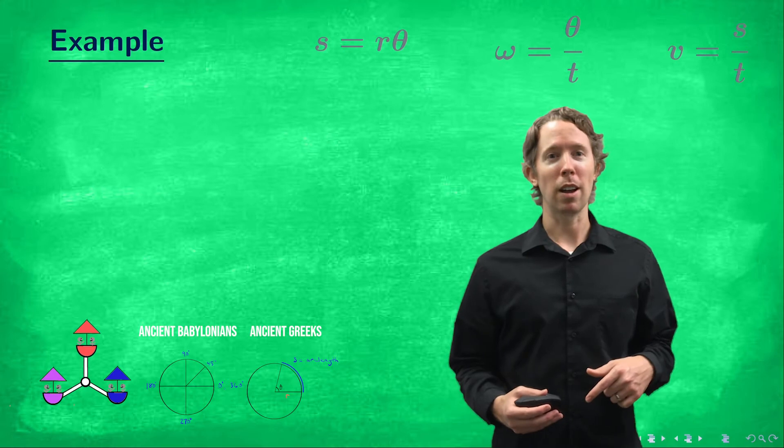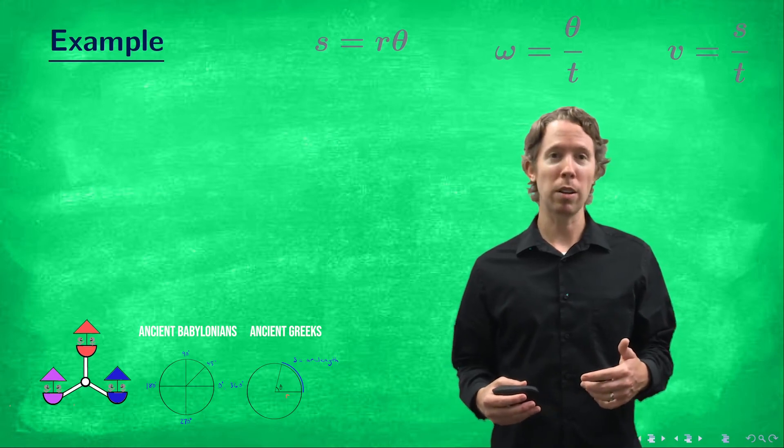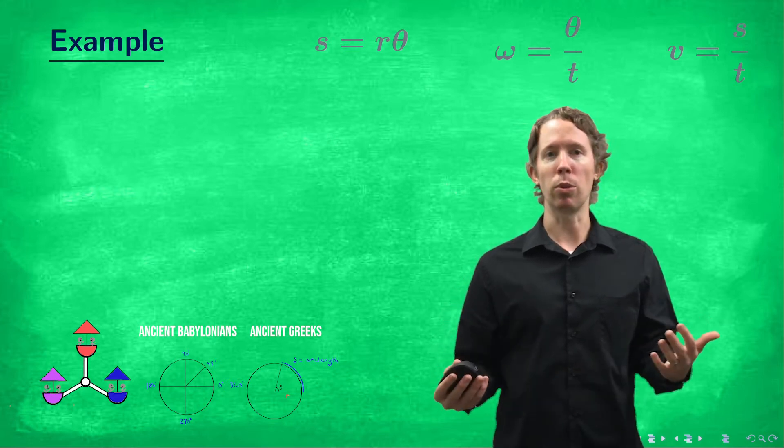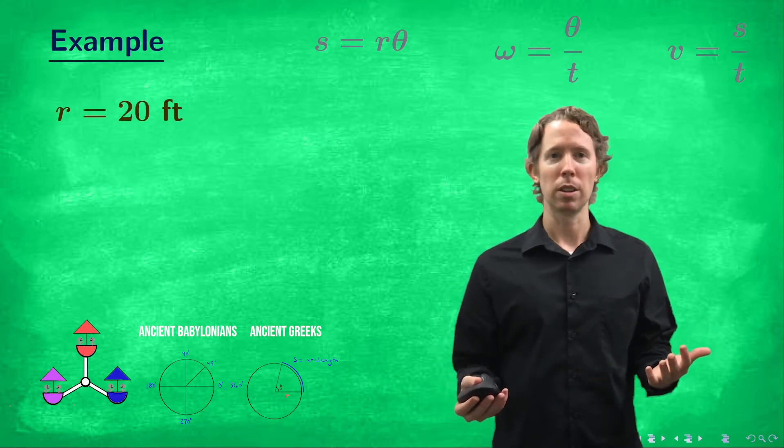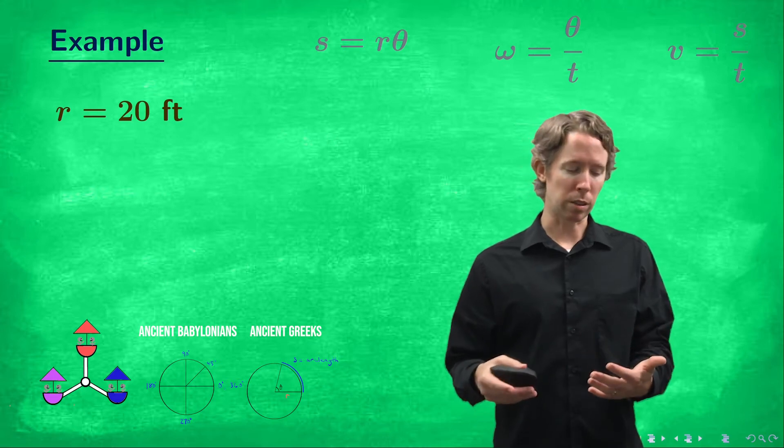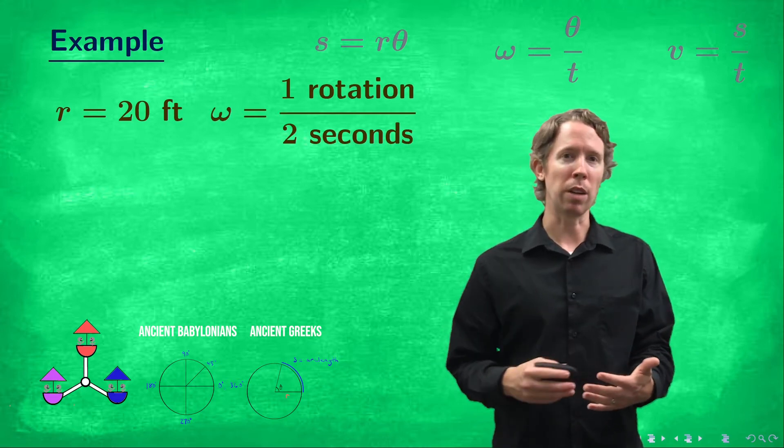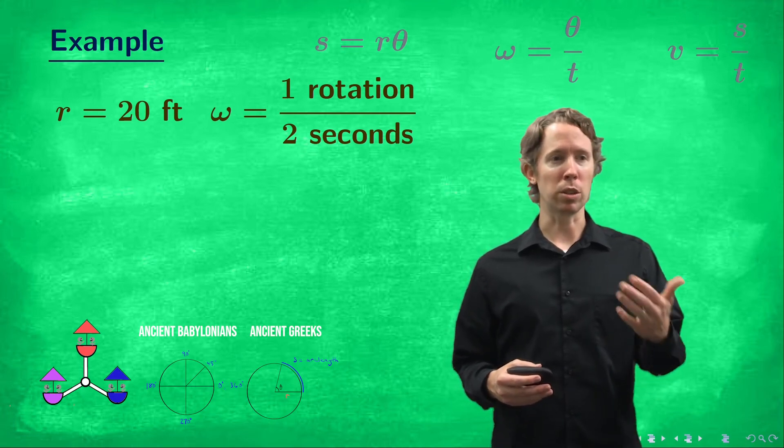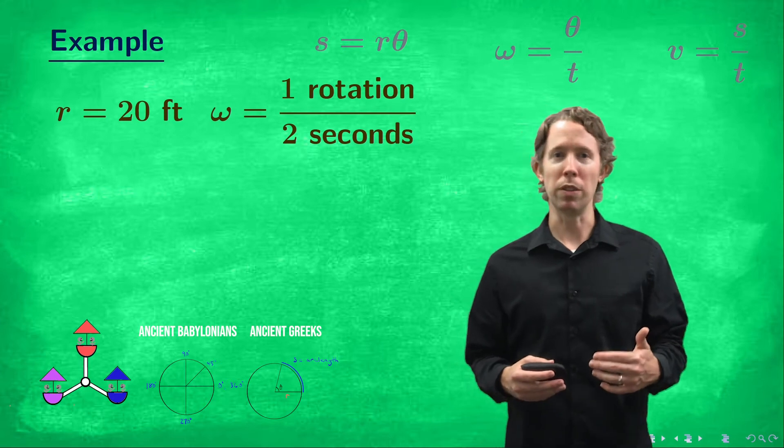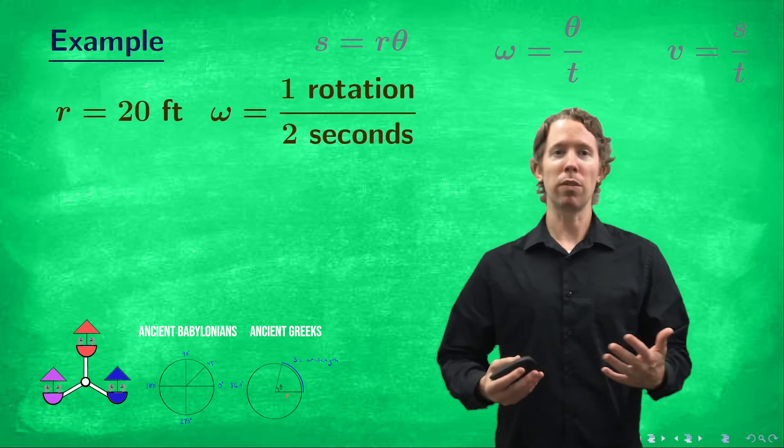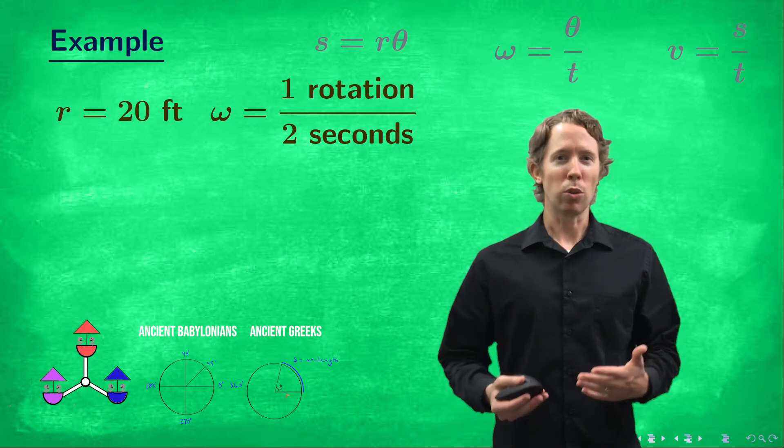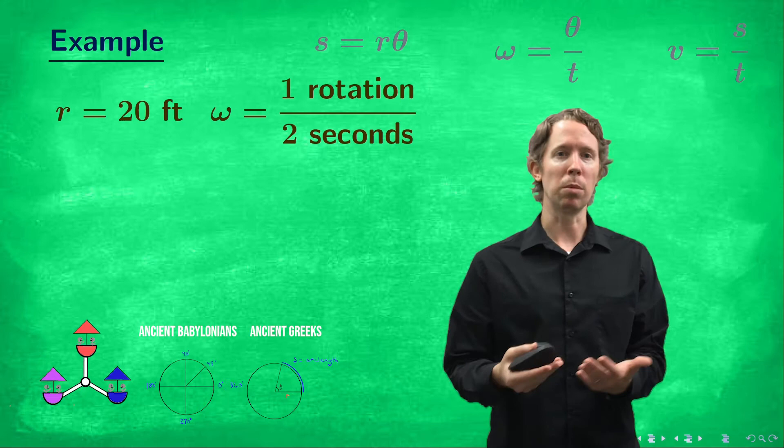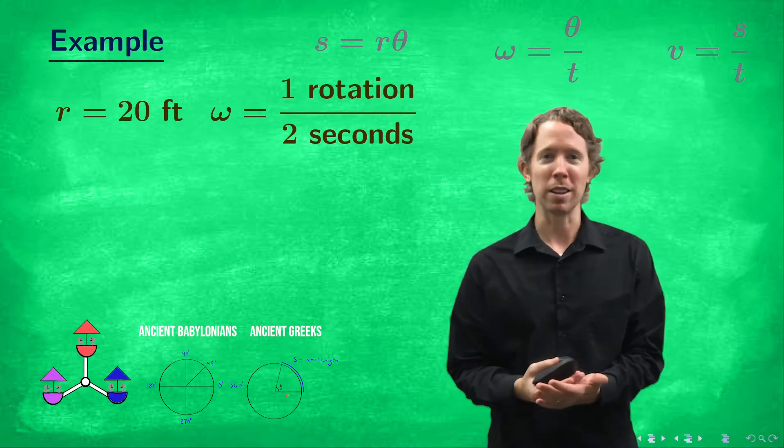All right. Let's think about our carnival ride where you've got people spinning around in a circle. And let's say we know the radius. Let's say it's 20 feet. And then let's say that this ride is making one full rotation every two seconds. So we know that omega is one rotation for every two seconds. R is 20 feet. And then we want to find v. We want to find the linear speed. So the question is, is there a nice relationship between v and then this r and w, r and omega that we already know?